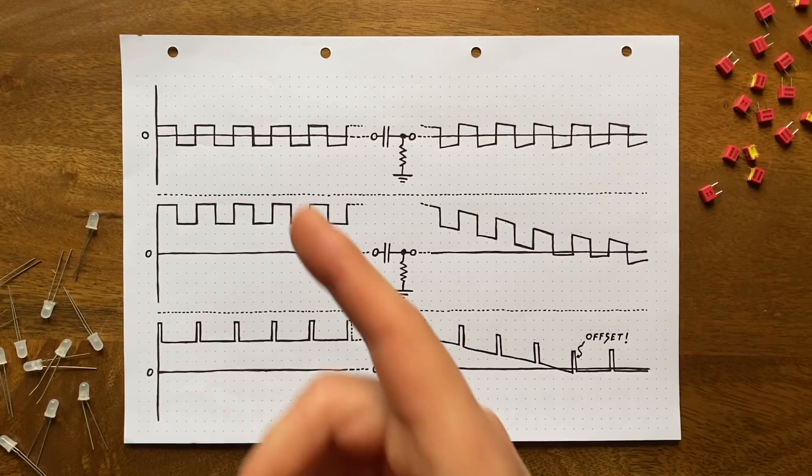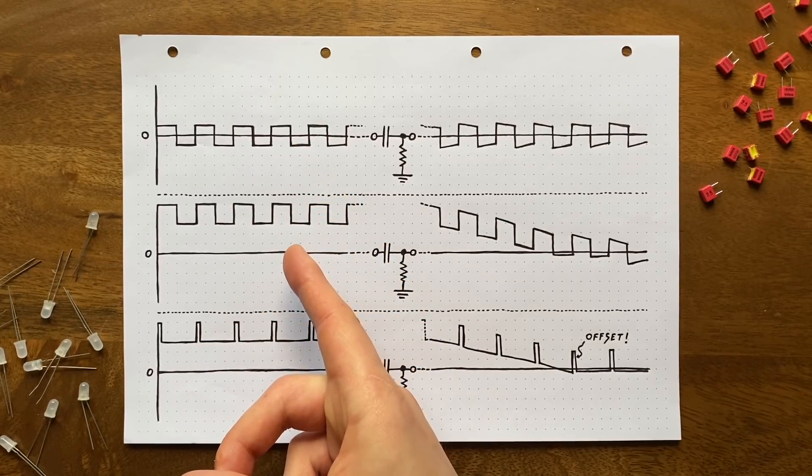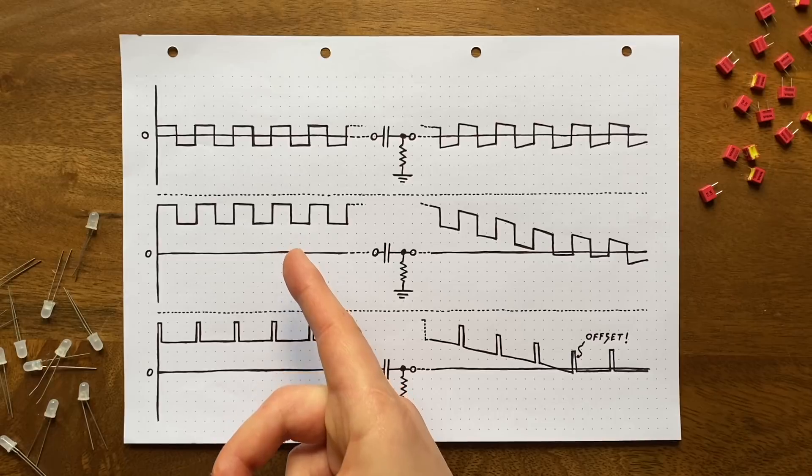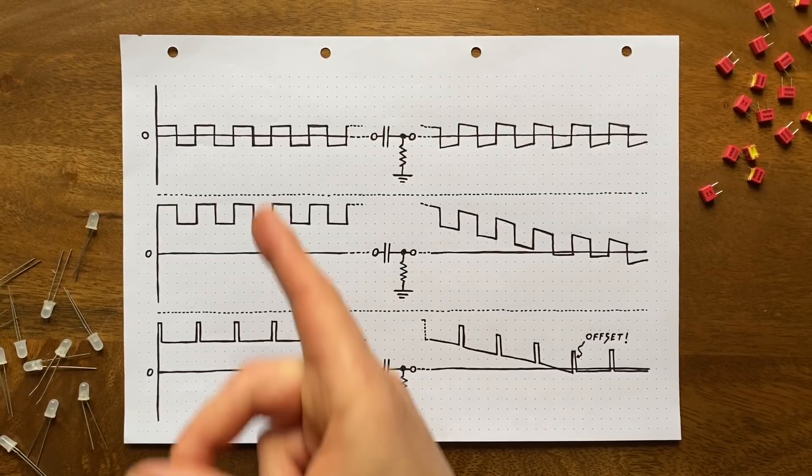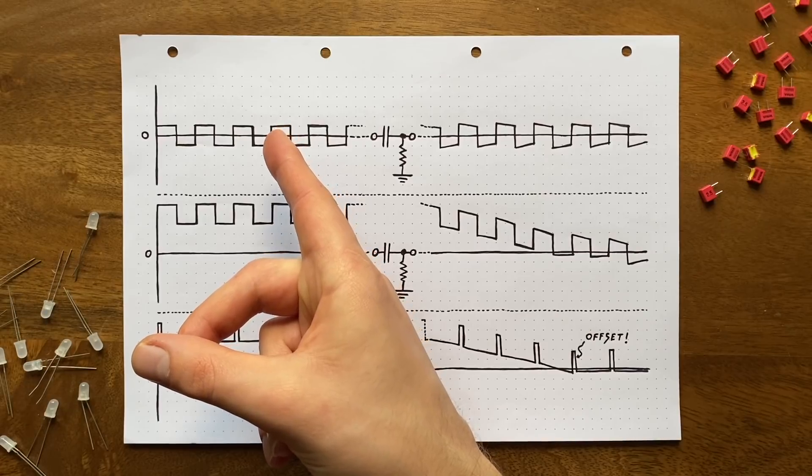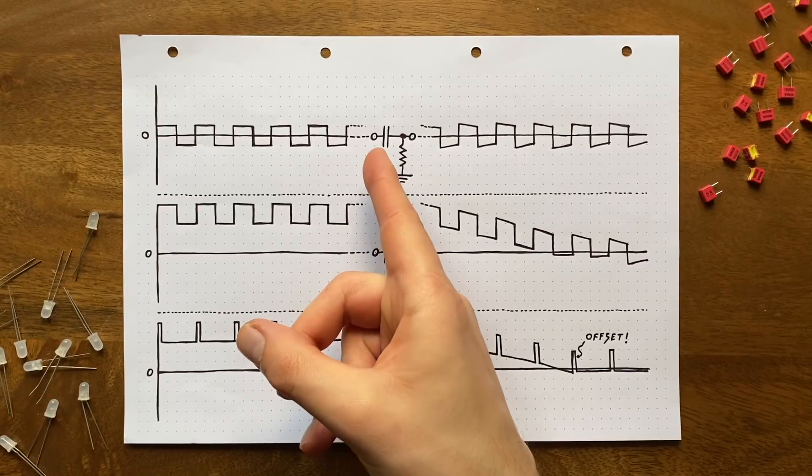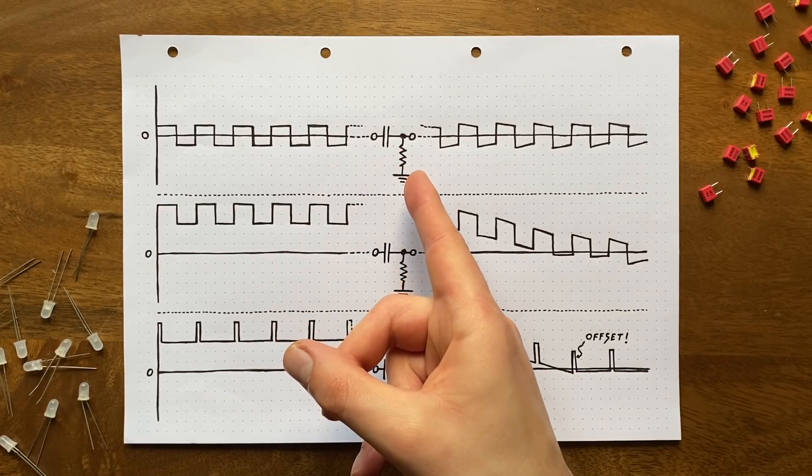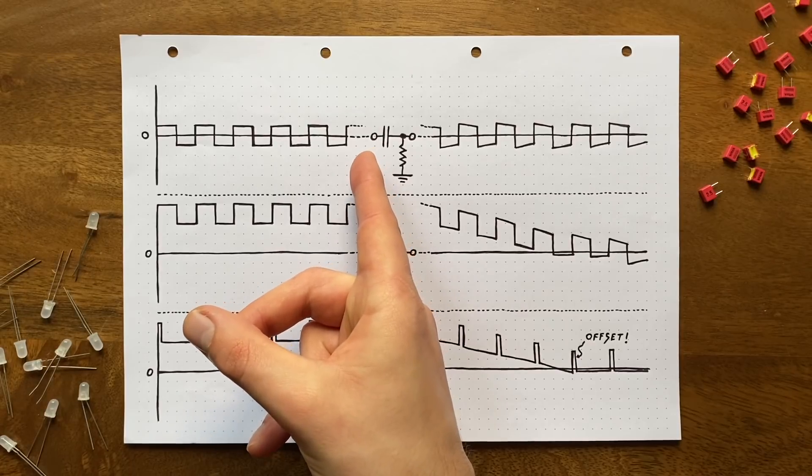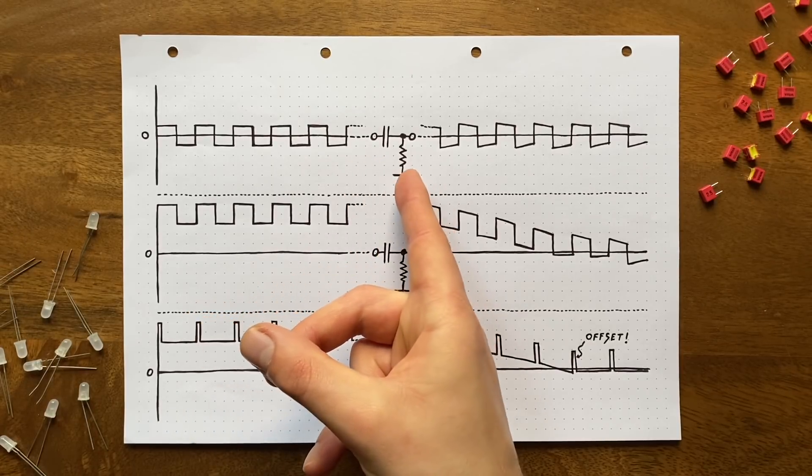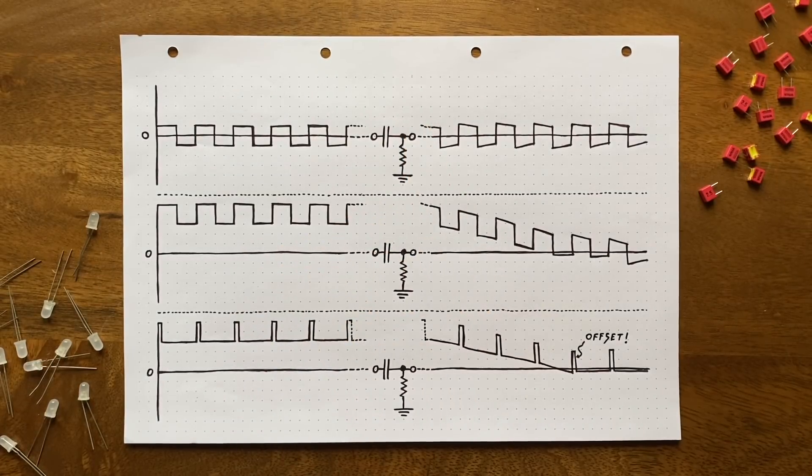If we go back to our water analogy, this actually becomes quite obvious. Let's consider three example input signals. First a 50% square wave with no offset. Then a 50% square with a positive offset. And finally a 5% square with a positive offset.